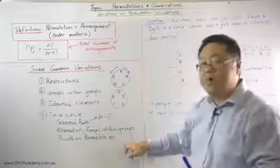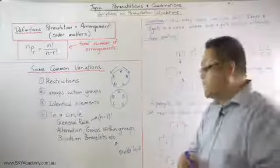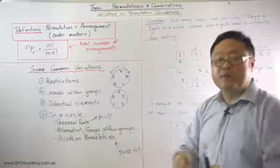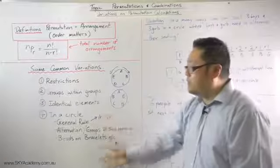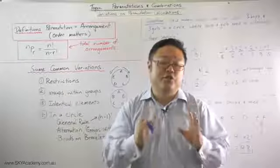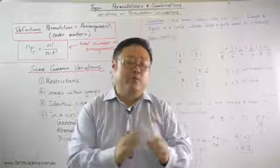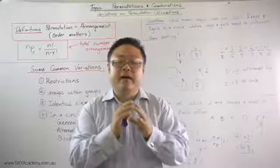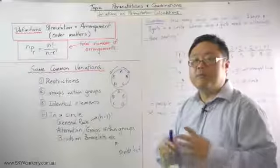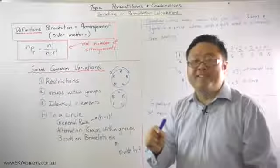So for a beads-on-a-bracelet question, you have to divide by two, collapsing the clockwise and anti-clockwise arrangements into one, because that's essentially what they are. Arrangements in a circle can get complicated and tend to do the heads in of a lot of students, but if you understand the general principles — the general rule of N minus one factorial, alternation, groups within groups, and beads on a bracelet — you can handle the variations you're likely to get in permutation questions. In the next episode we'll be looking at combinations. Thanks, bye.